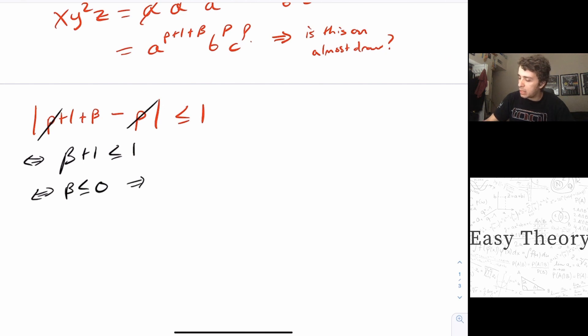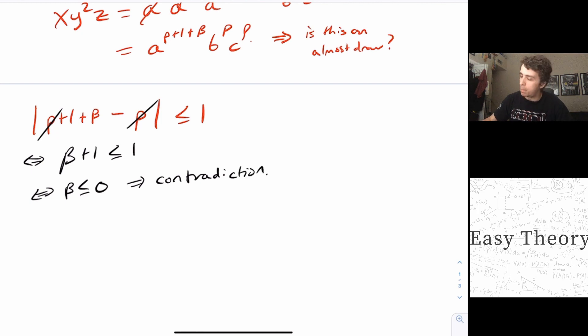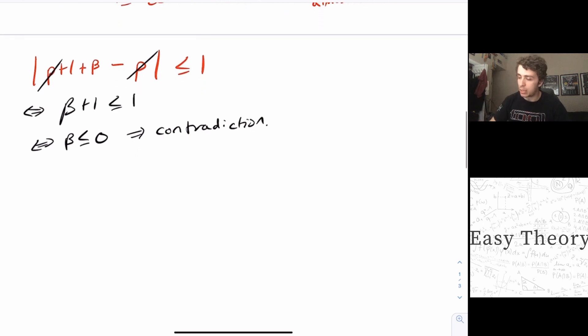Which gives us a contradiction, because we must have that beta is at least one. And we arrived at beta is at most zero, so therefore it's a contradiction. So this implies that x, y squared z, the string we have, is not in the language L, which implies that L is not regular.